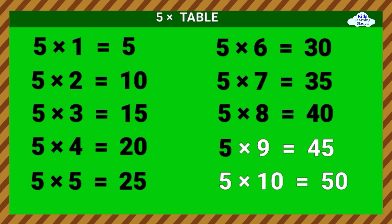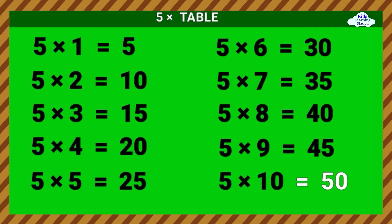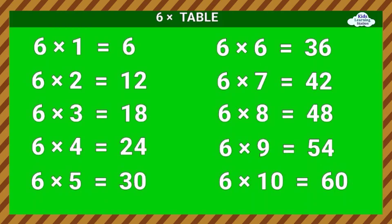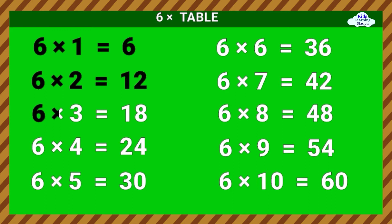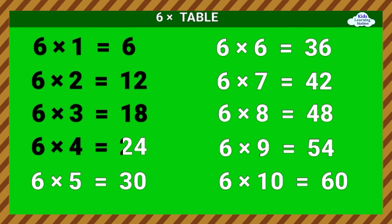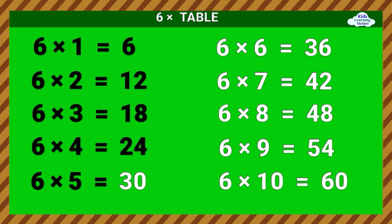5 times 9 equals 45. 5 times 10 equals 50. Six Times Table. 6 times 1 equals 6. 6 times 2 equals 12. 6 times 3 equals 18. 6 times 4 equals 24. 6 times 5 equals 30.